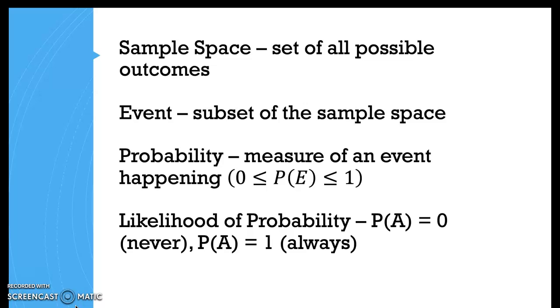And the probability, usually we want to find the probability of an event. So the probability is measuring the likelihood of an event happening. Probability of an event, P(E), has to be between 0 and 1. Now likelihood is talking about how likely is it for something to happen. If the probability of event A is 0, that means it cannot happen. A probability of 0 is never happening, whereas a probability of 1 is always happening.